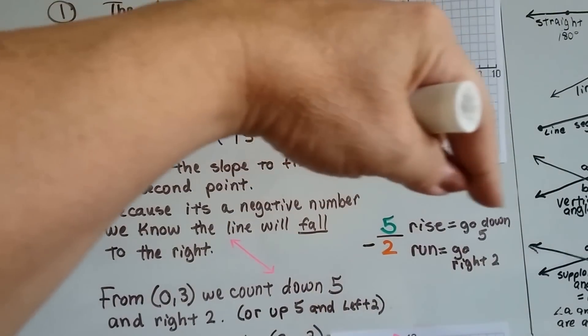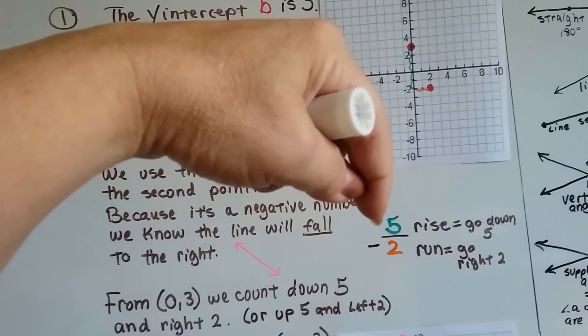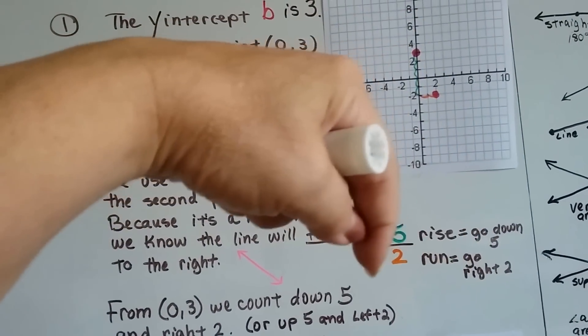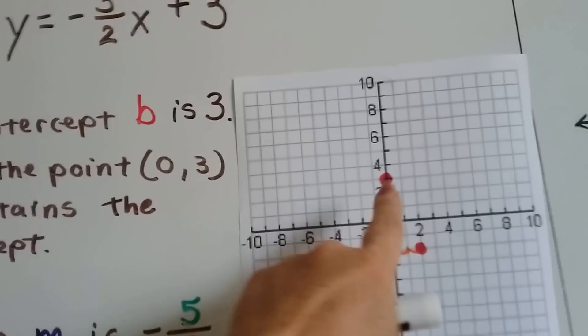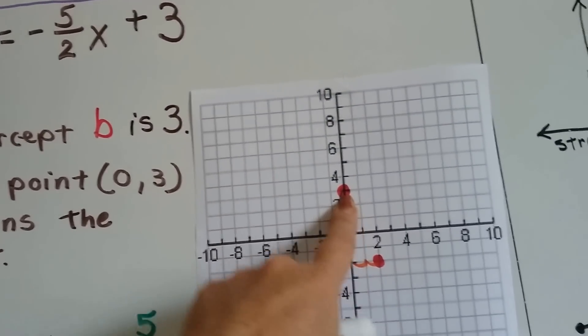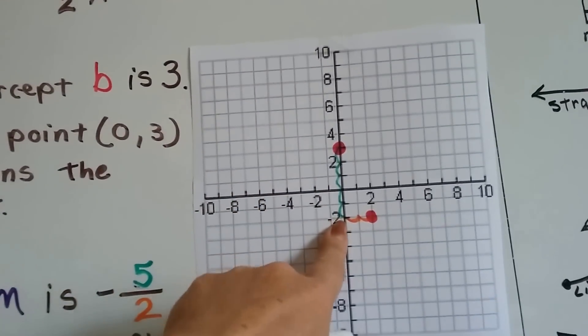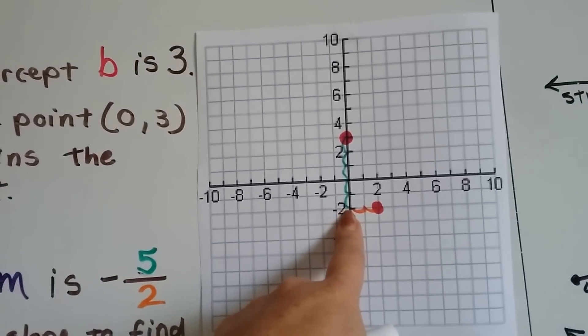So we're going to go down 5. This is a negative, so we're going to go down 5, and then we're going to go right 2. So we do. We were right here at x, 0, and y, 3. We're going to go down 5. 1, 2, 3, 4, 5. That puts us at negative 2 on y's line.